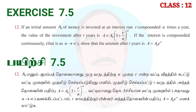If an initial amount of money A₀ is invested at an interest rate R, compounded N times per year, the value of the investment after T years is A = A₀ · (1 + R/N)^(Nt). If the interest is compounded continuously — that is, as N tends to infinity — we want to show that the amount after T years is A = A₀ · e^(RT).